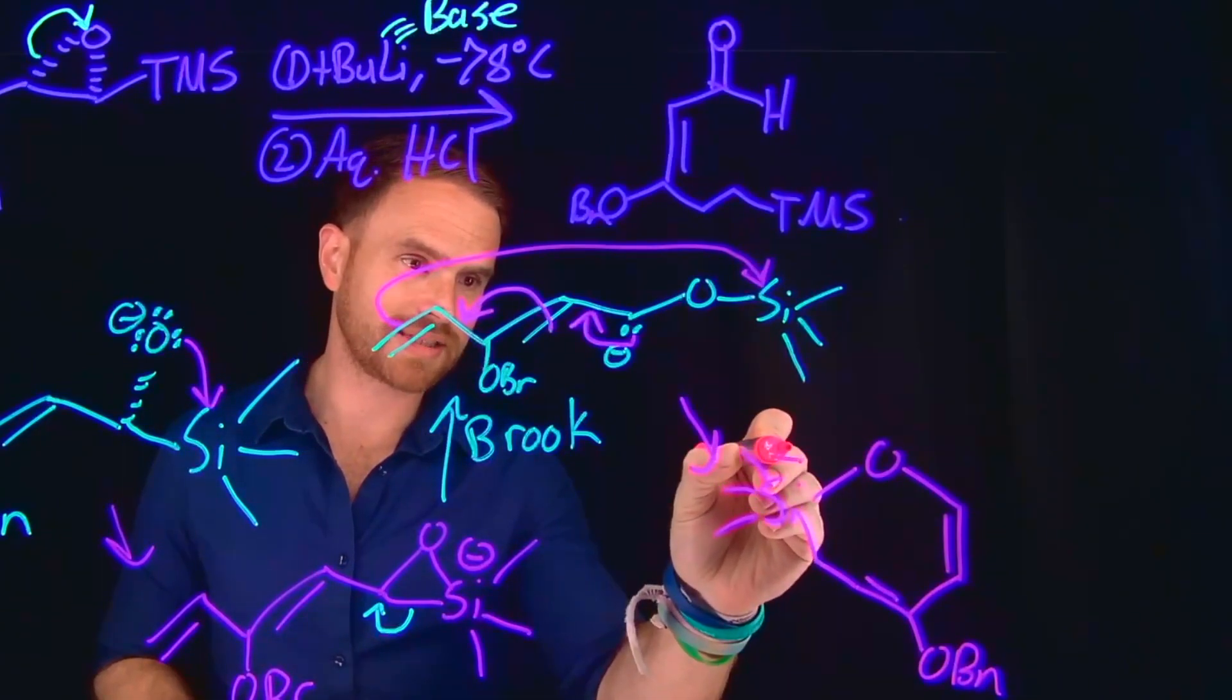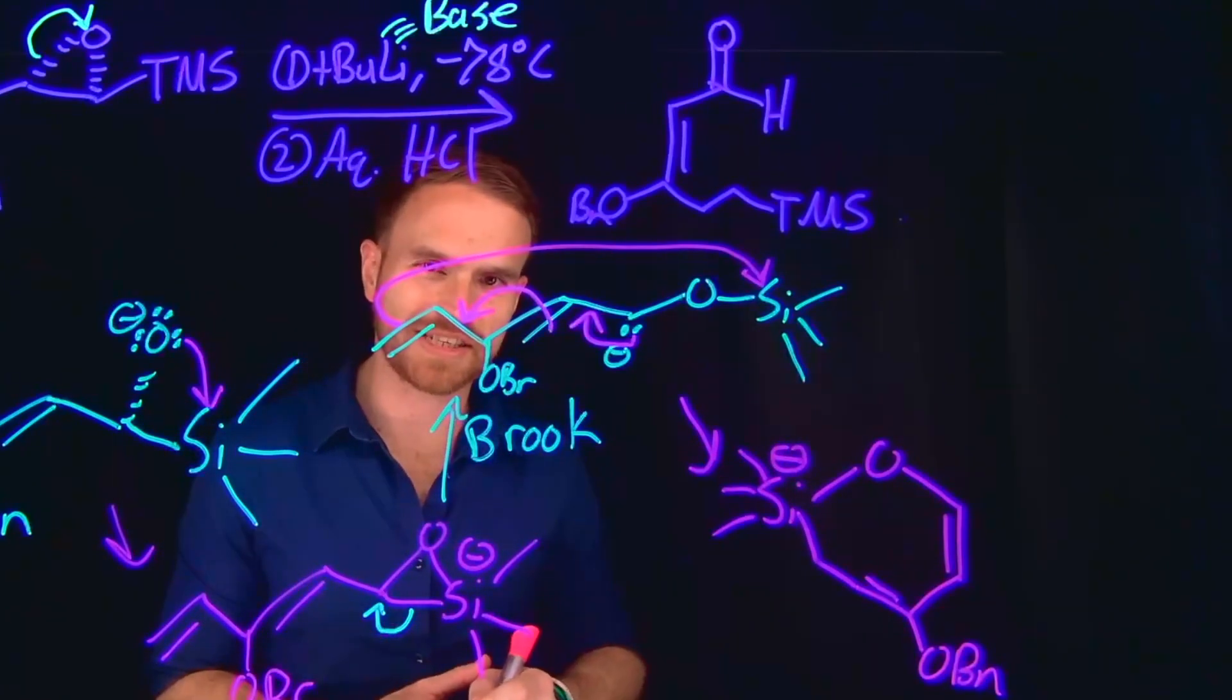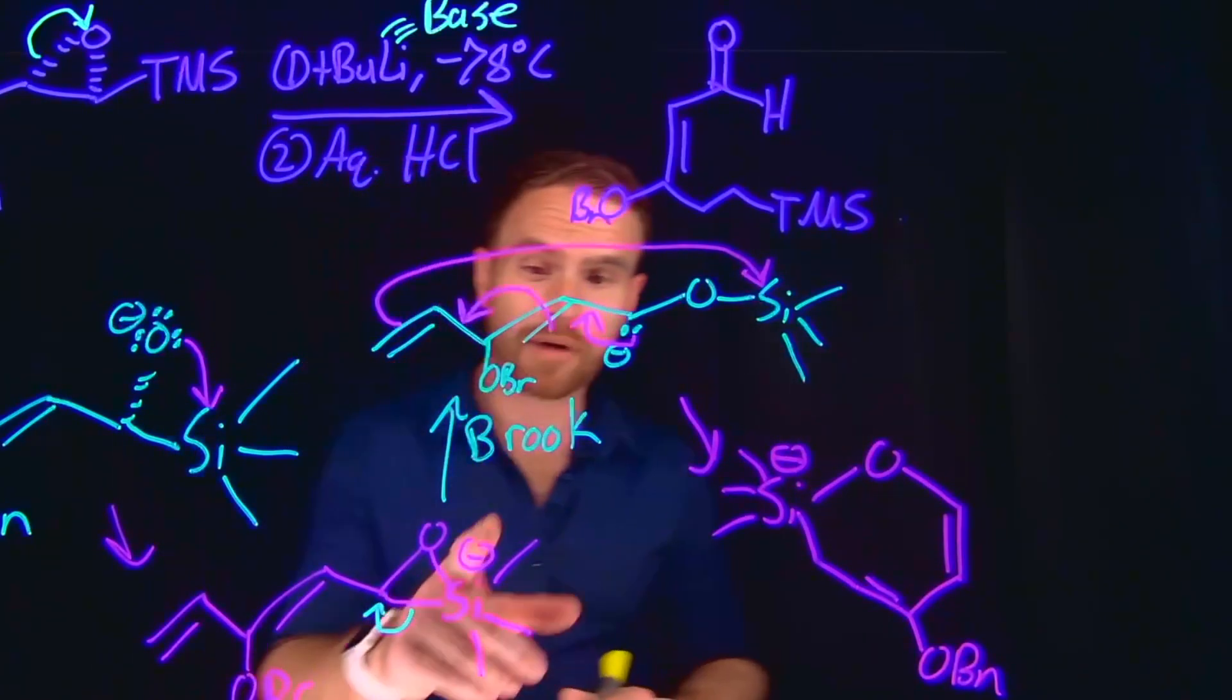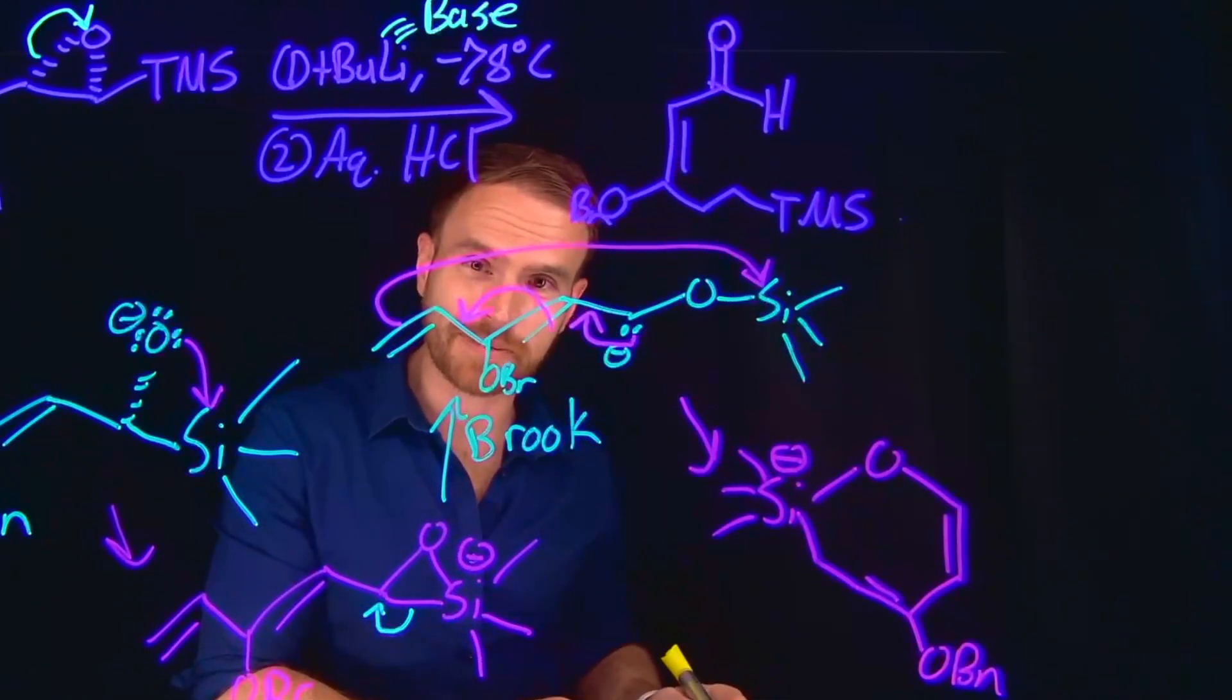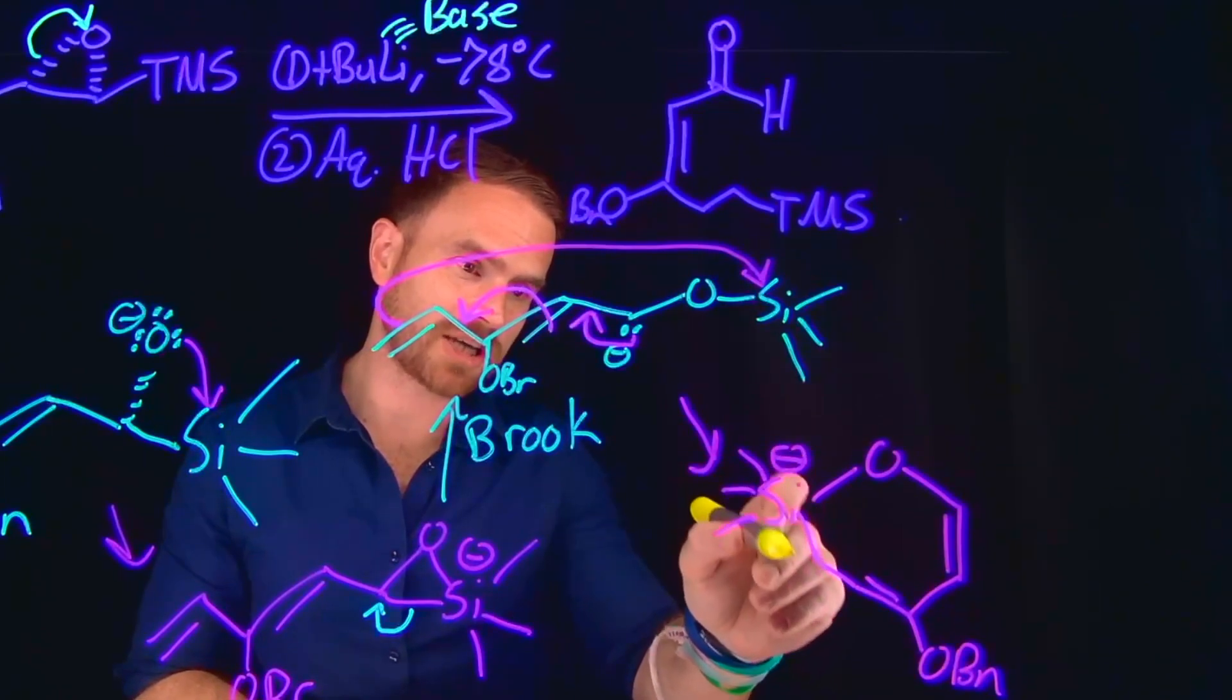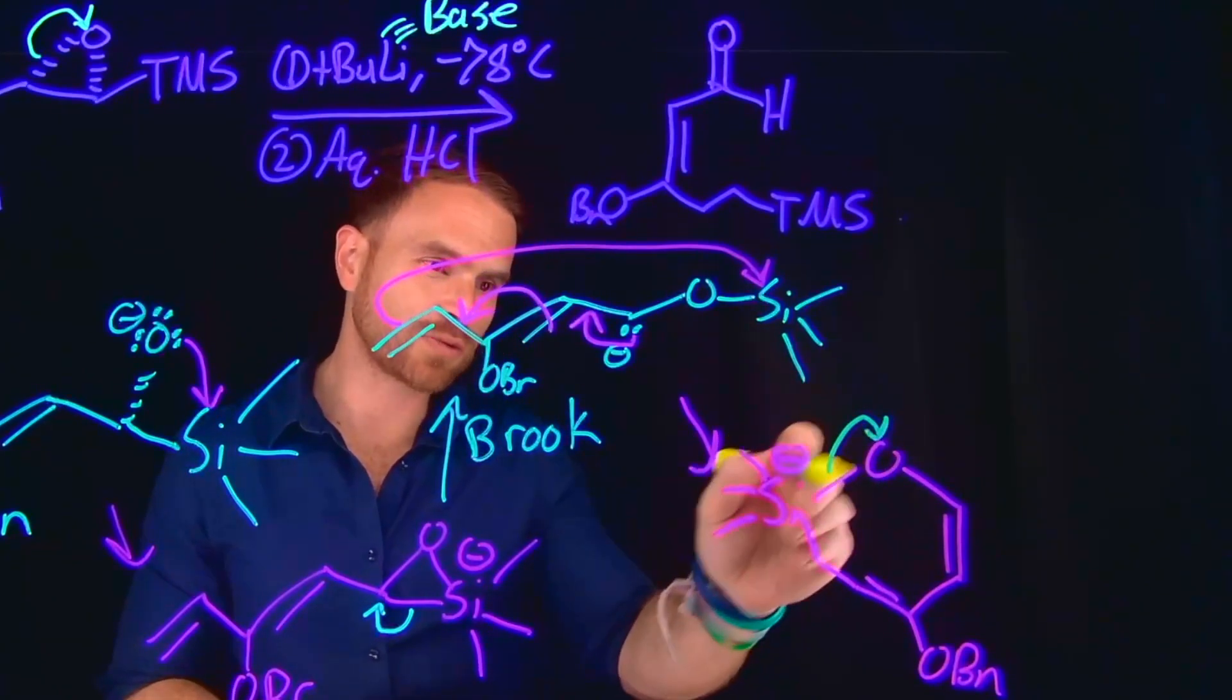And in this example, the silicon is now again going to be negatively charged because it has those extra electrons attached to it. So then I know you just learned about Brook rearrangements, but the next step is actually what's known as a retro Brook rearrangement, where instead of the electrons coming over here, what will happen is that the electrons will go to this oxygen and this will open up this ring.